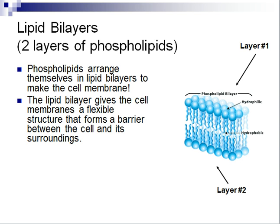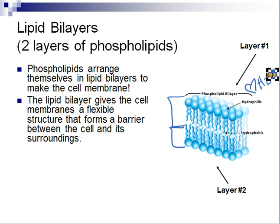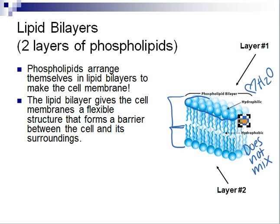When we take a closer look at all of this, the major portion of the cell membrane is made out of a phospholipid bilayer, meaning that it has two different layers of phospholipids. Here we see layer number one right here and layer number two right there. Within these layers, we are going to see that there are hydrophilic parts, which means it loves water, and there are hydrophobic parts, which means it fears water or does not mix with water.